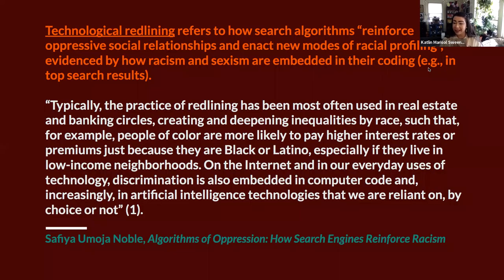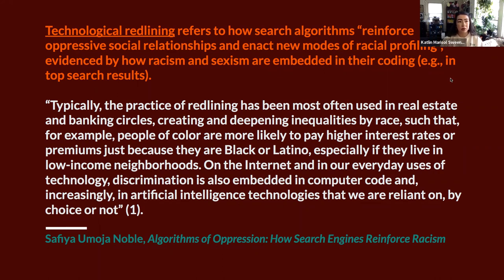One of the terms she offers in Algorithms of Oppression is 'technological redlining,' which she describes as how search algorithms reinforce oppressive social relationships and enact new modes of racial profiling, evidenced by how racism and sexism are embedded in their coding — for example, in top search results. Algorithms are designed by people, and people carry biases with them. We can't assume that a machine doesn't hold the bias of its creator simply because it's a machine; the bias will find its way into the system unless there's careful attention to ensuring that this does not happen.